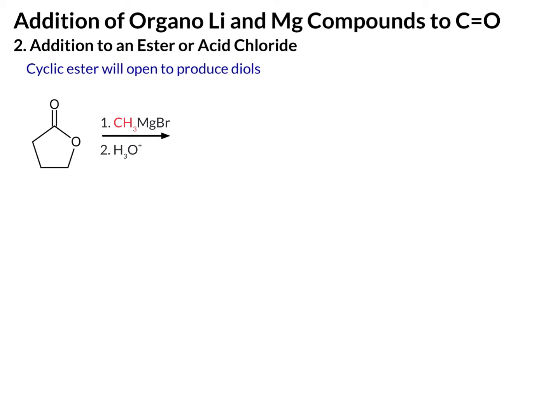In this example, we have a cyclic ester, and we're reacting it with a Grignard reagent, methylmagnesium bromide, which we're going to treat as CH3 minus. What's a little bit different about this one is that our leaving group — the oxygen — is tethered into the molecule, so it's going to be retained in the final product. Let's go through the mechanism. The first step is what you already know: we add CH3 minus to the carbonyl.